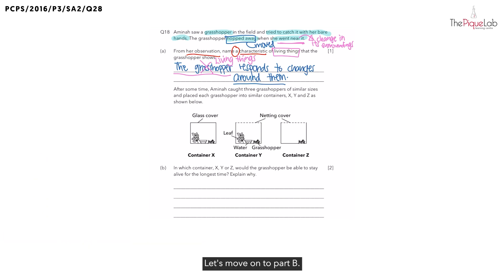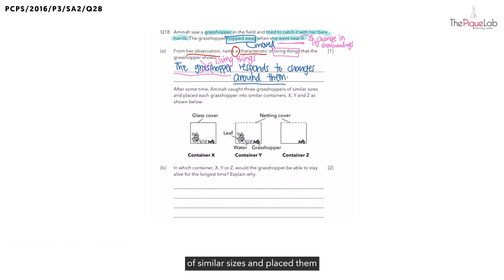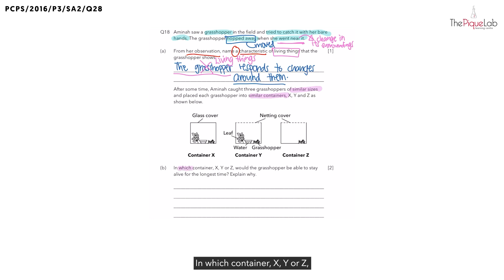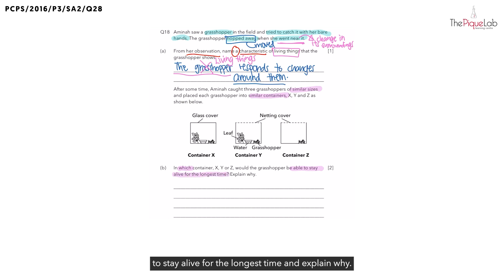Let's move on to Part B. After some time, Amina caught three grasshoppers of similar sizes and placed them in similar containers X, Y and Z as shown below. In which container — X, Y or Z — would the grasshopper be able to stay alive for the longest time, and explain why?